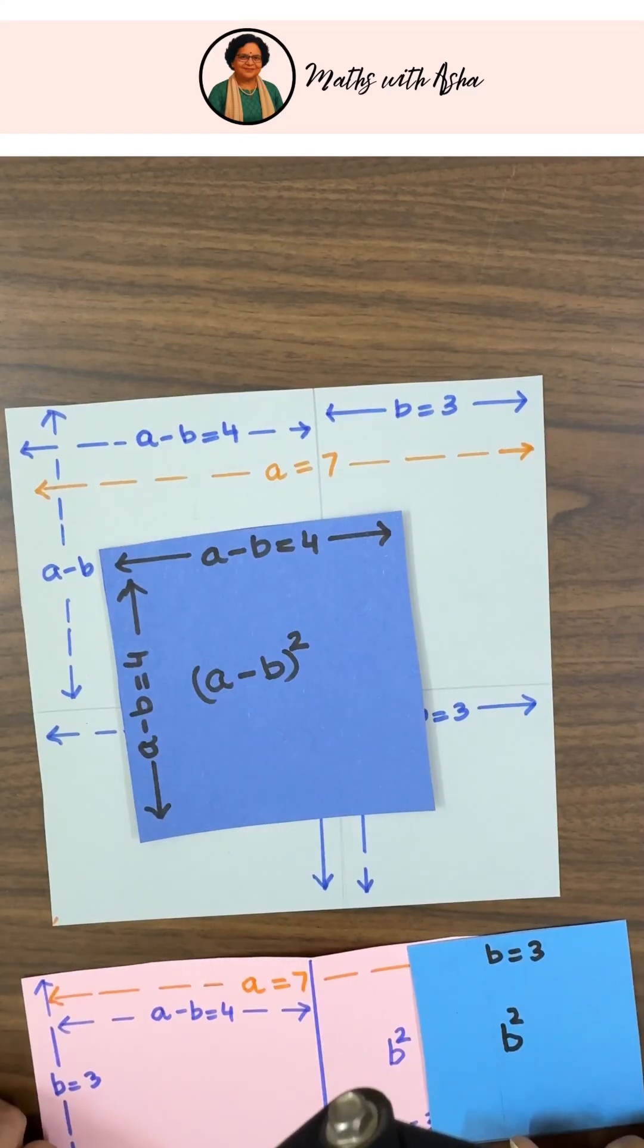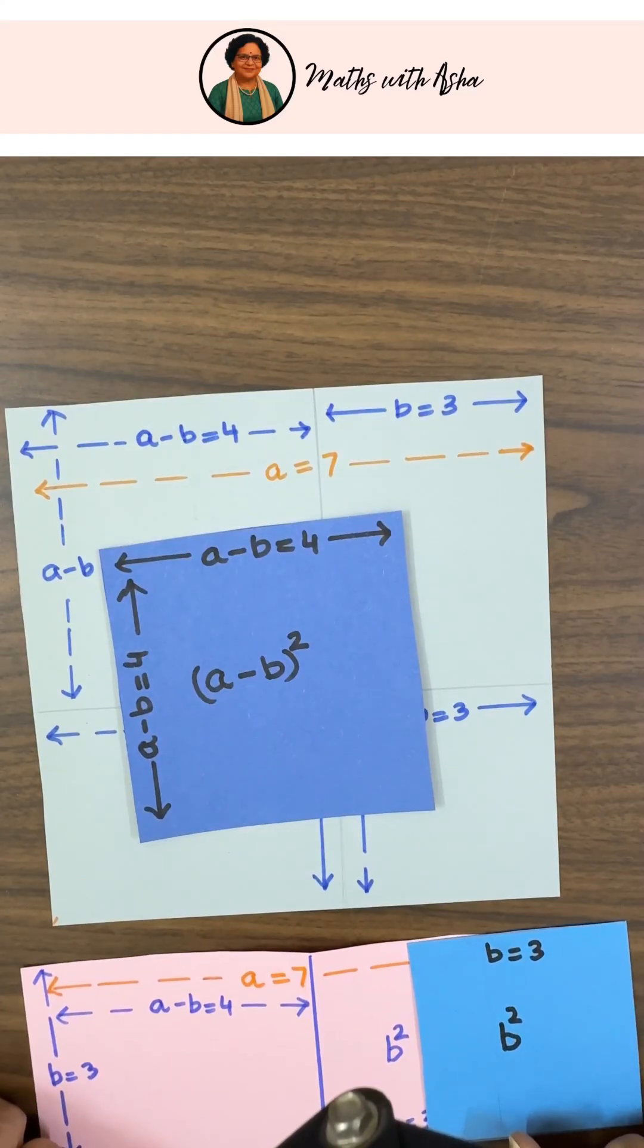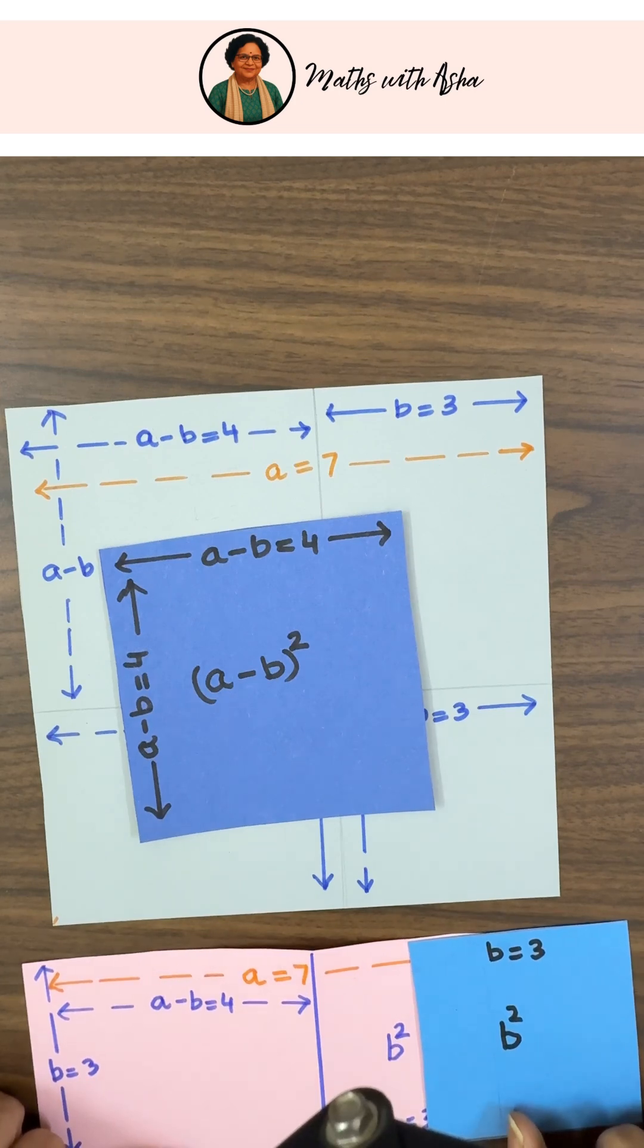In this C, Do and Learn series, we are going to prove that A minus B whole square is equal to A square plus B square minus 2AB visually.